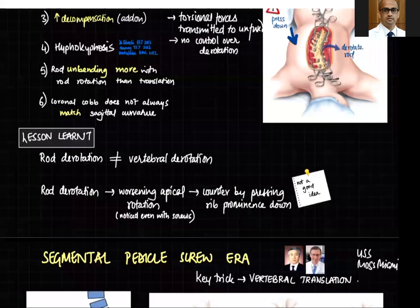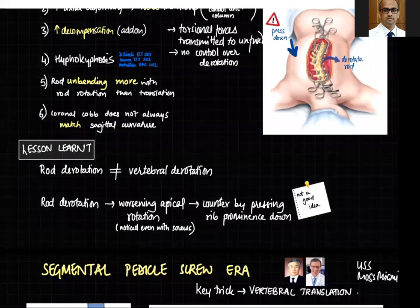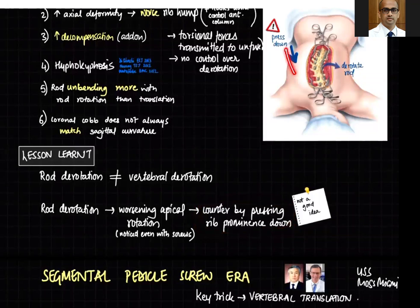The lessons learned were that rod derotation manoeuvre is not equivalent to a vertebral derotation manoeuvre. The rod derotation manoeuvre, especially when used on a single rod, can actually worsen apical rotation even if you are using screws. Countering it by pressing down on the rib prominence is not a good idea because it reduces kyphosis.